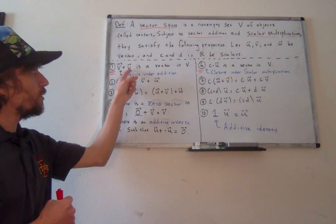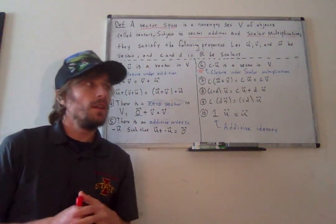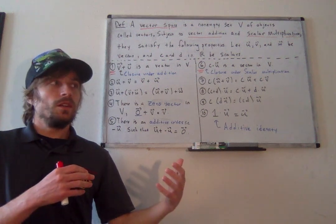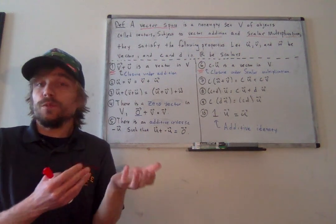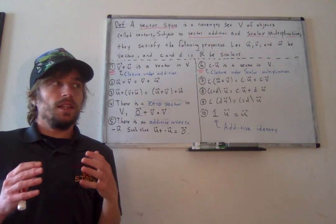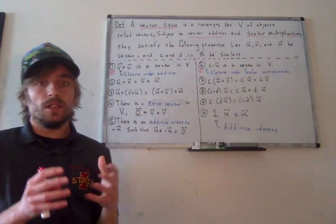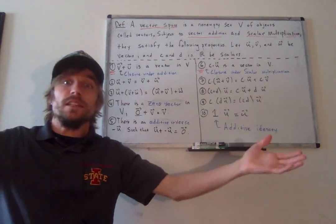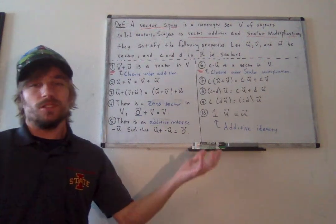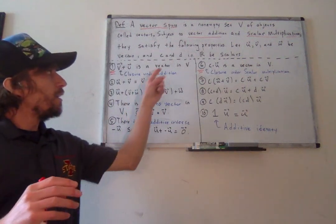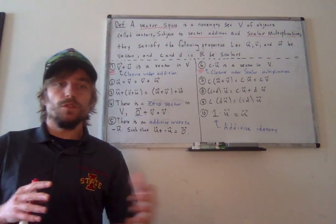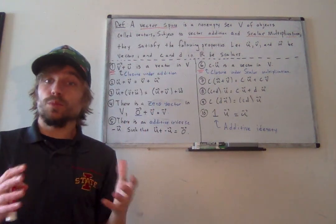For V to be a vector space, the first additive property it must satisfy: the sum of two vectors must itself be a vector. This seems trivial — with the vectors we've worked with so far, the sum of any two vectors of length three gives a new vector of length three. That's all this property is saying: if I add these two things together using this operation, I shouldn't get something completely new, like a vector of length 11.